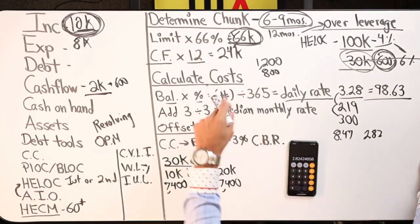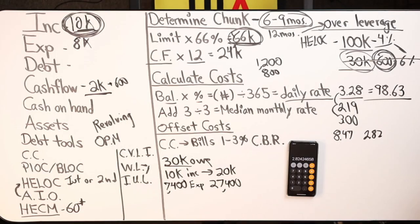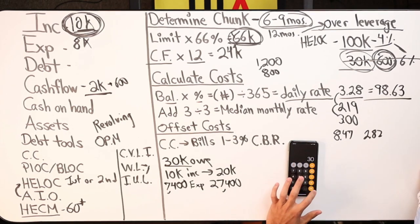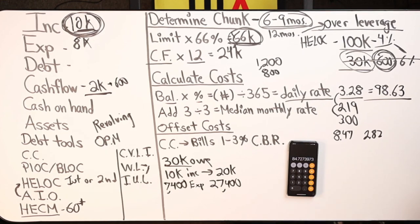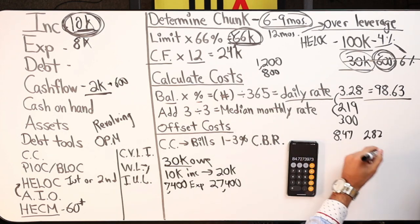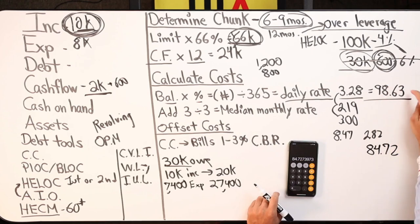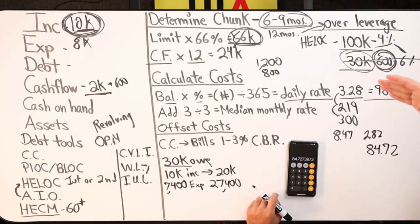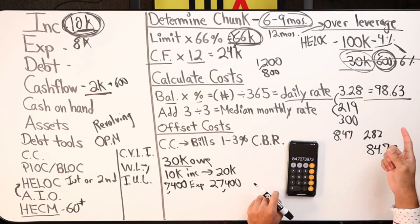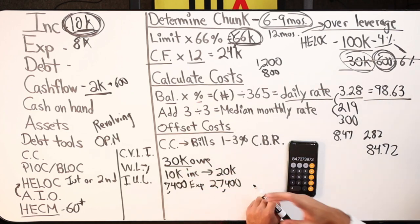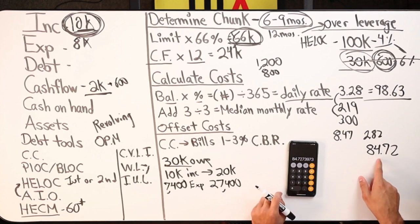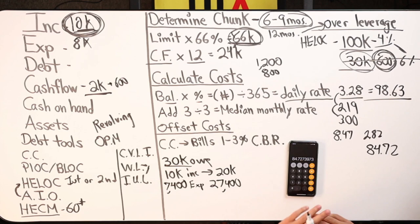Now we want to get the monthly median rate, add the three, divide by three. $3 plus 2.19 plus 3.28 is $8.47, divide by three is $2.82 is my average daily rate. I did it this way to provide overestimated numbers. When I draw it out for my clients, they actually do better than what I present to them. I just brought $9,863 to $8,472 as my estimated median monthly rate first month.